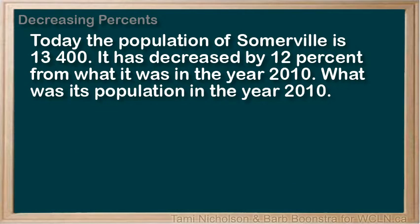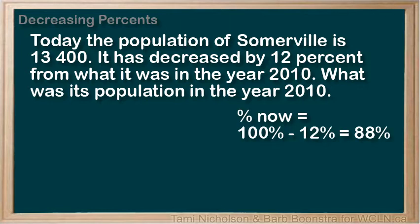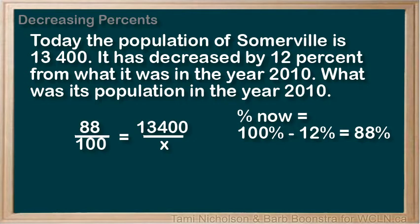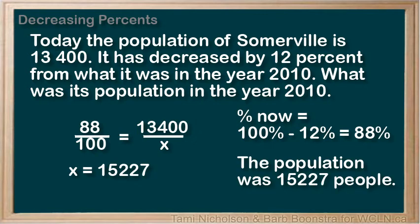Let's do one more example. Today the population of Somerville is 13,400. It has decreased by 12% from what it was in the year 2010. What was its population in the year 2010? We find that the population now is 100 minus 12%, or 88% of what it was in 2010. Write the equivalent ratios, substitute in the values, and solve for the unknown. The population in 2010 was 15,227, rounded to the nearest person.